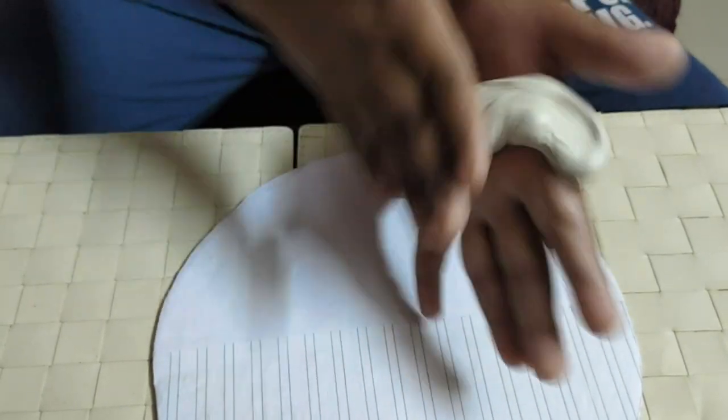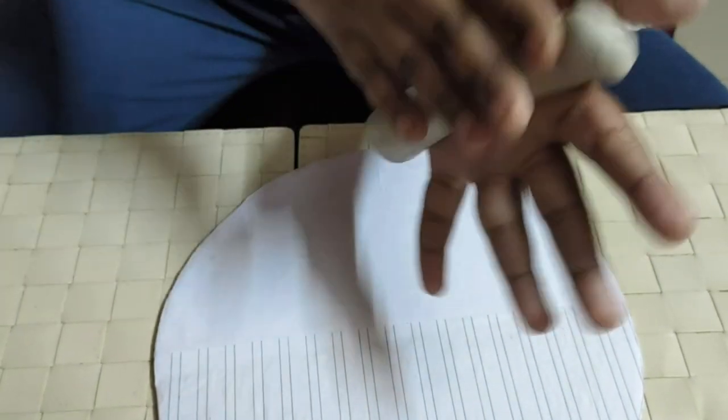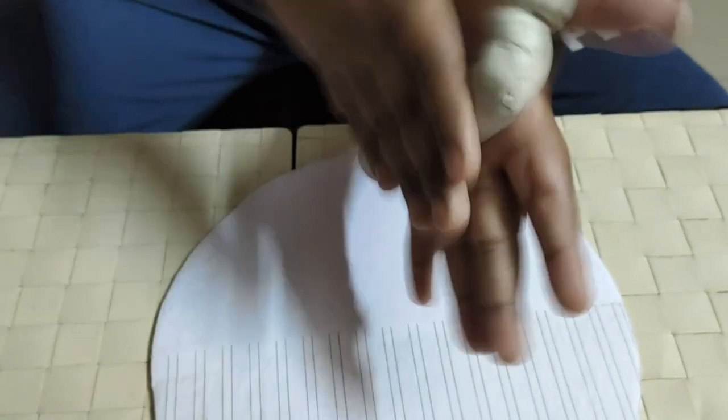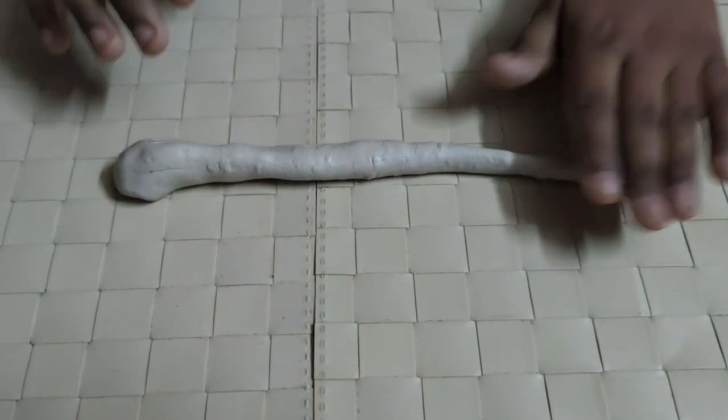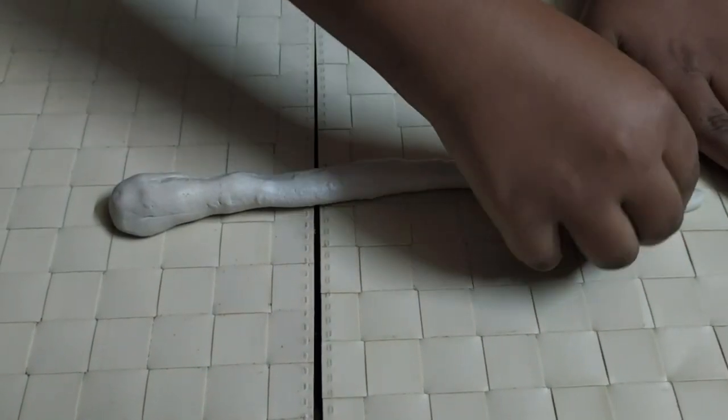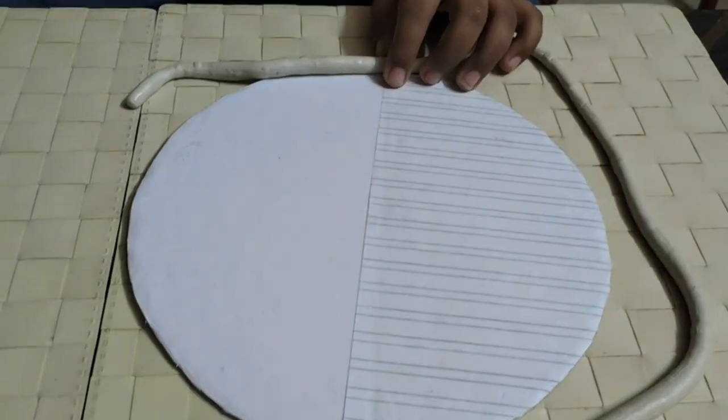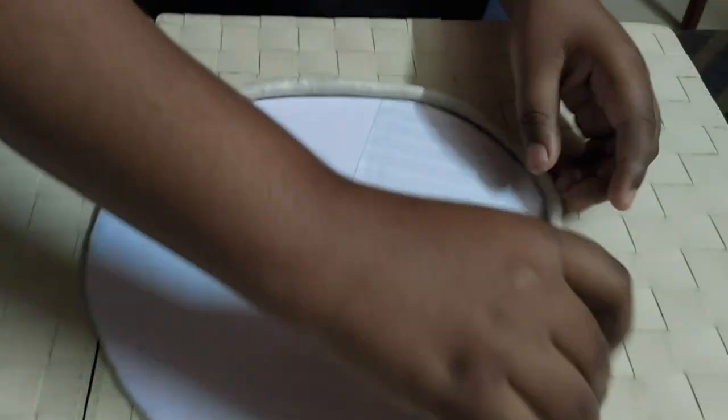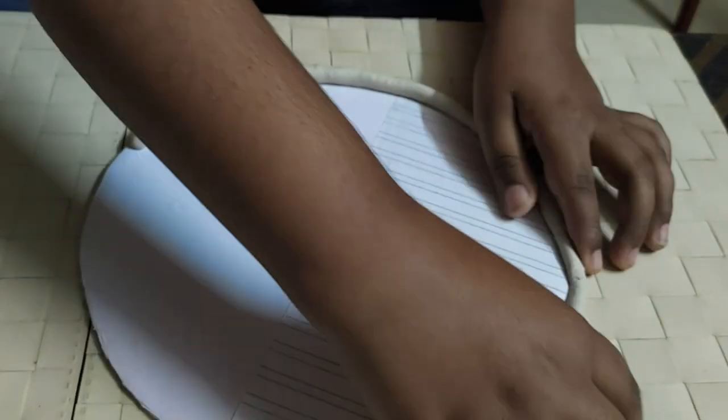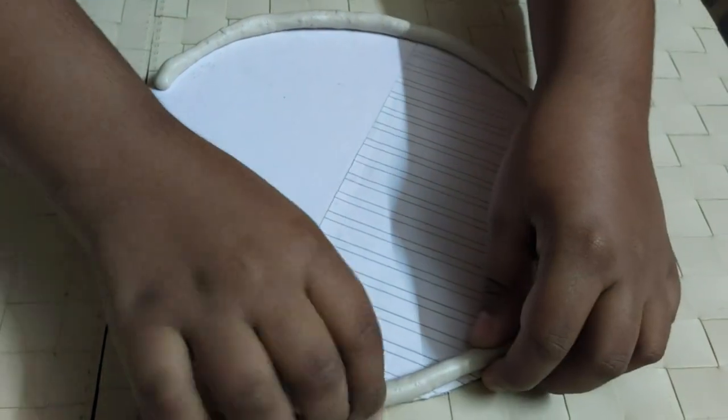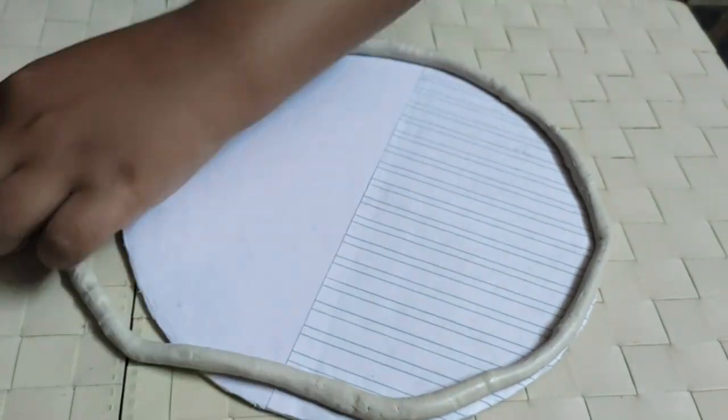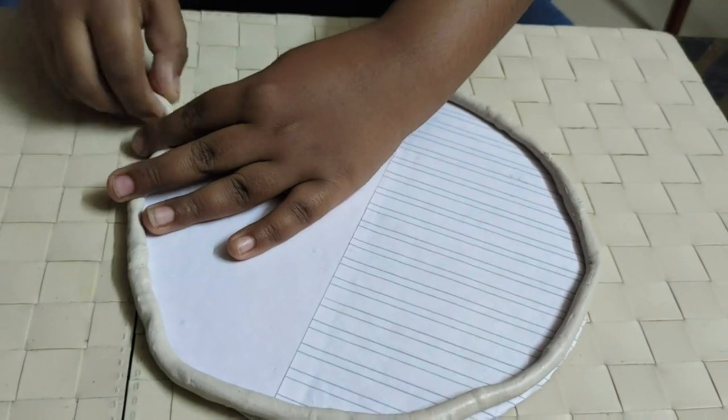Now I am going to roll it into a tube and fix it into the border of the clock. I have sticked it. Now I am going to smooth it using water.